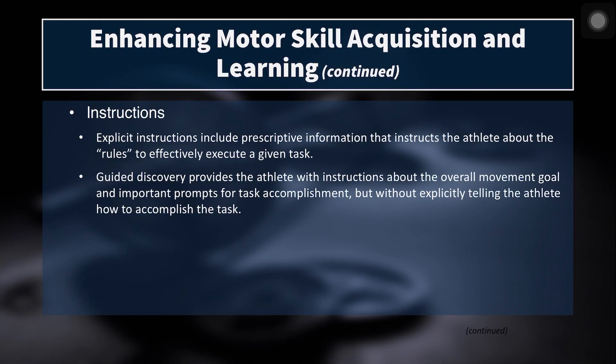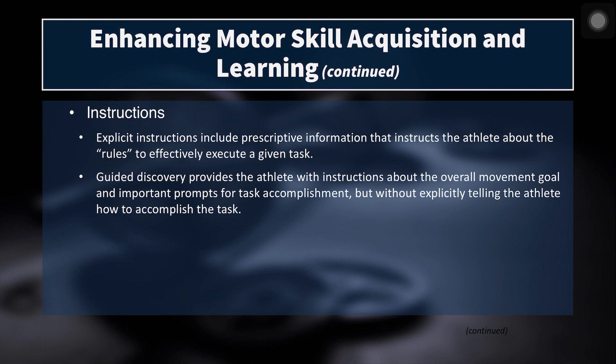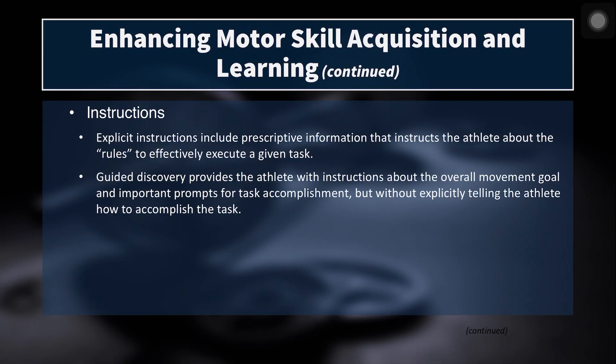During practice or training sessions, coaches give instructions, and it's helpful to know what types of instructions do what for athletes. Explicit instructions include prescriptive information about the rules to effectively execute a task — for example, cueing 'chest up' during a squat, telling athletes to screw their feet into the floor, or cueing an arched back and scapular retraction on the bench press. Guided discovery provides the athlete with information about the overall movement goal and allows the athlete to accomplish the task in a way they see fit, finding the optimal method themselves.